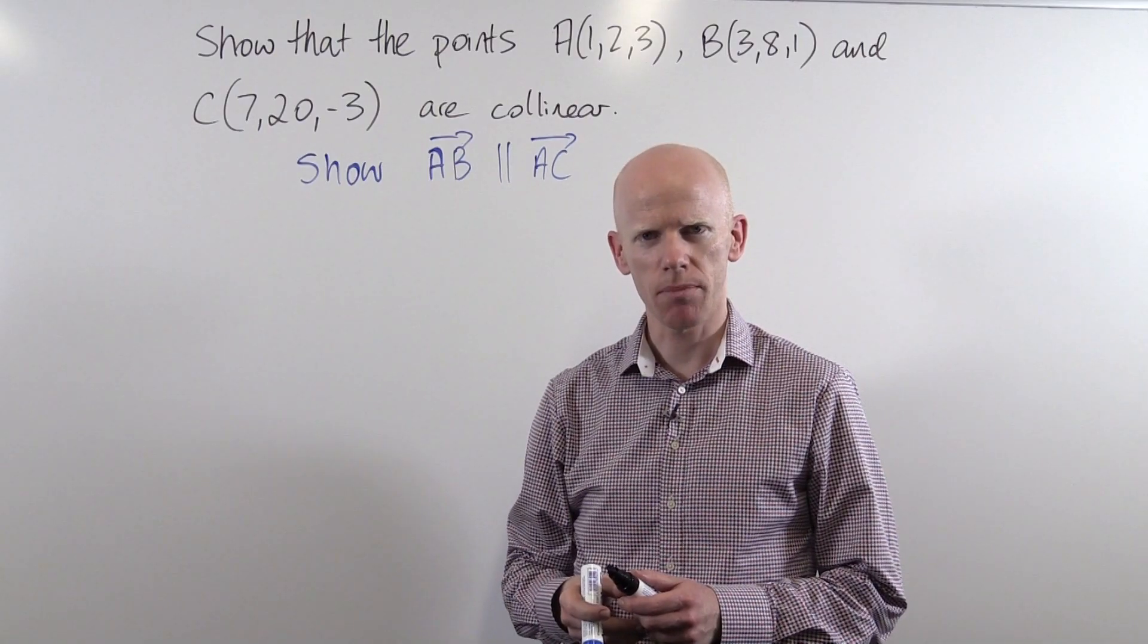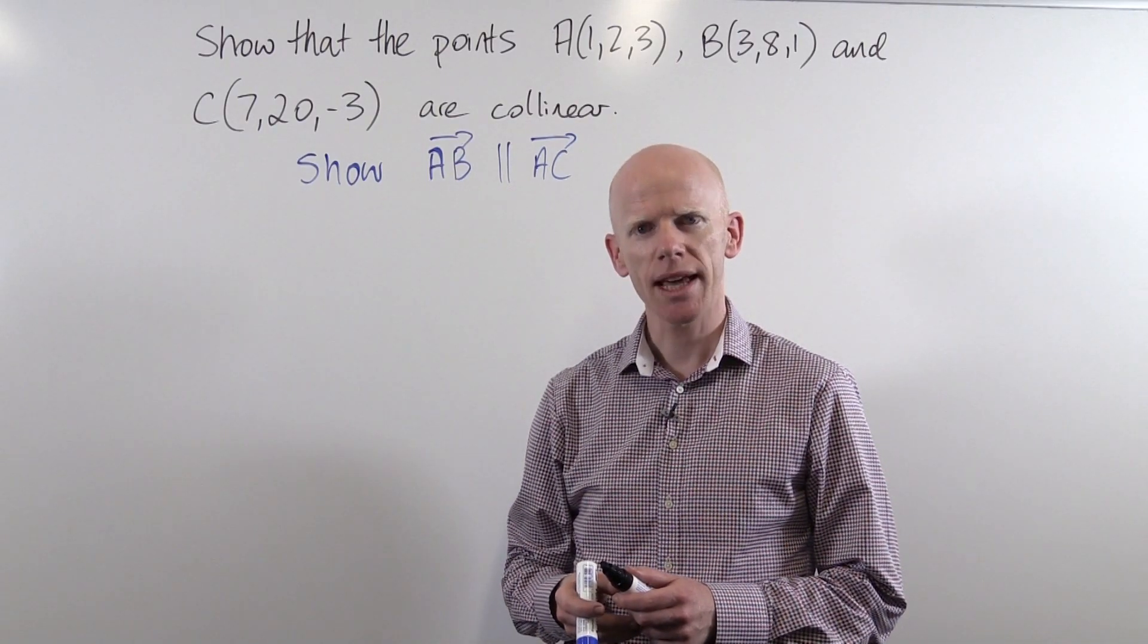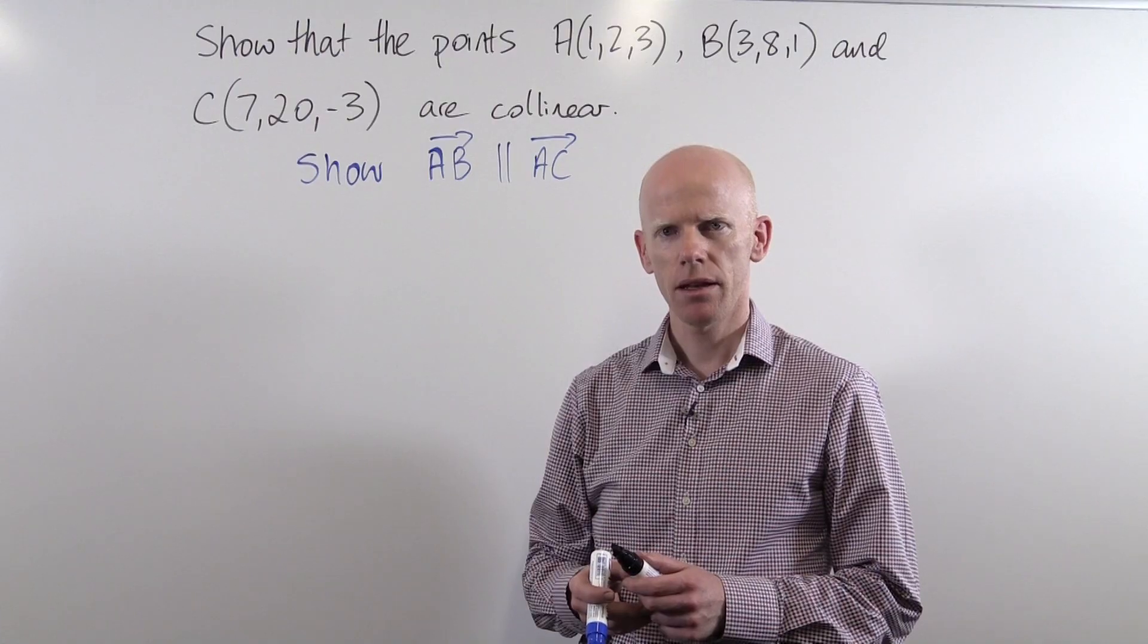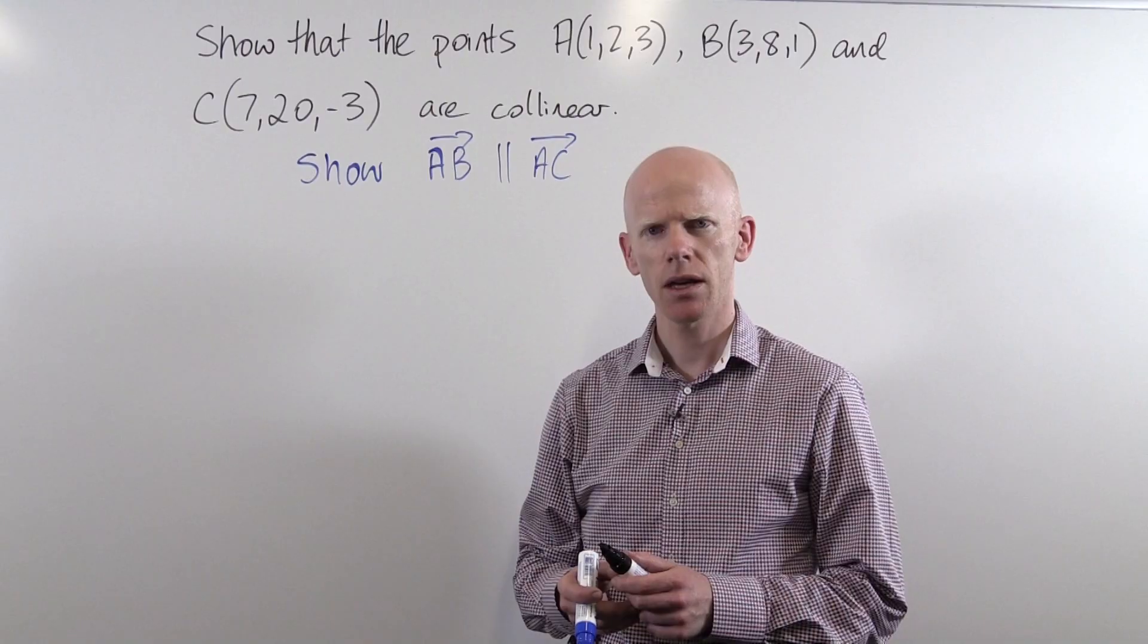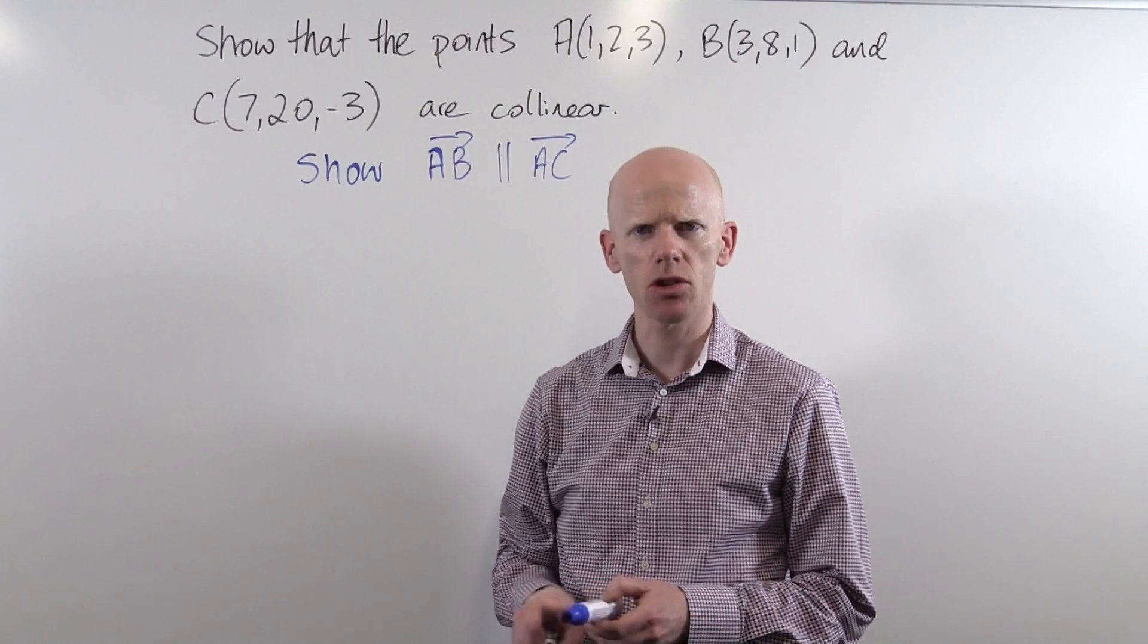If I can show those vectors are parallel because they have a common point A, then the three points must therefore be collinear. Let's write down expressions for each of those vectors.